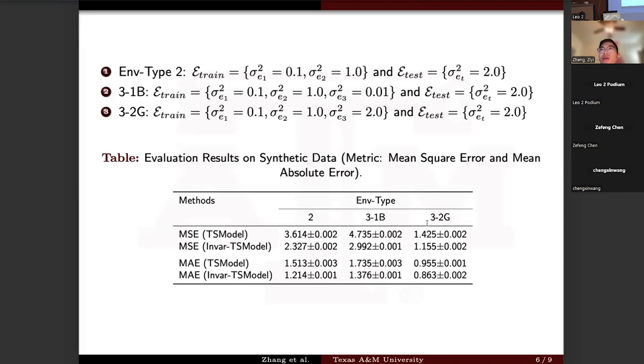From this result, we can see all models perform well in the third setting when compared with the first two settings. This is because the training distribution is closer to the target distribution. Furthermore, our proposed invariant time series model performs better than the standard LSTM model in three settings, which benefits from the incorporation of invariant risk minimization.